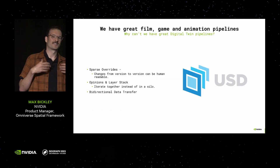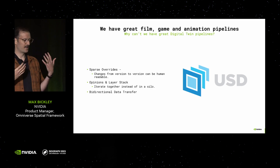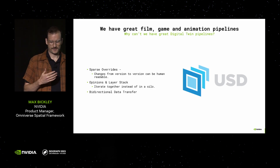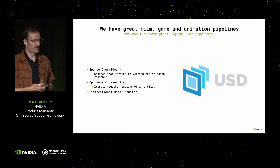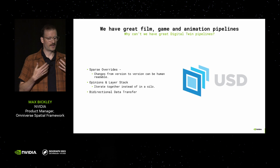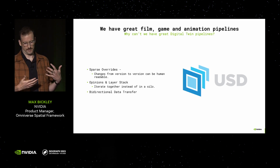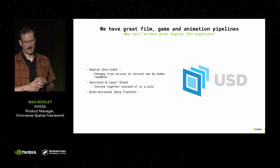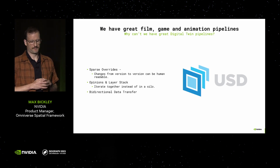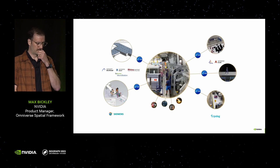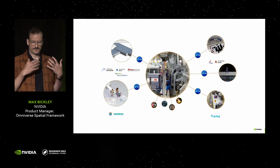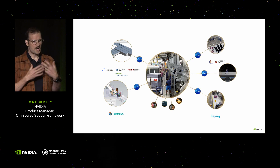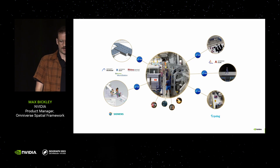It's no surprise that OpenUSD is cut from the same cloth as that mantra. It's why there are things like sparse overrides, so your incremental changes aren't wholesale copies of giant datasets — they're beautiful, human-readable files that are easy to store and transmit. It's why we have opinions in the layer stack so artists can confidently iterate alongside each other rather than being siloed. And the wider USD is adopted in applications, the easier it is to move your data back and forth from tool to tool. We want to build digital twins and experience them with spatial computing — that's the closest we'll get to experiencing the physical copy.